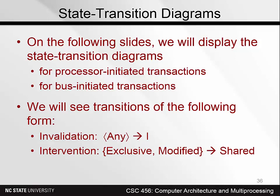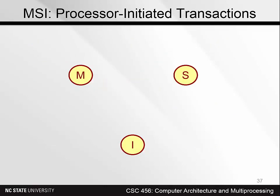We'll follow up with a state diagram showing all transactions, both processor-initiated and bus-initiated. When a line in any state moves into state I, that's an invalidation transition. When a line in state M moves into the shared state, that's called an intervention. We see the three states: M, S, and I. If a processor writes a block it hasn't cached, that's a processor-write out of state I, causing a bus read X transaction, so any other cache holding the block must transition the line into the invalid state.